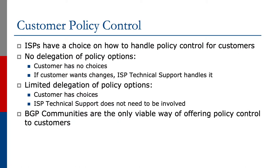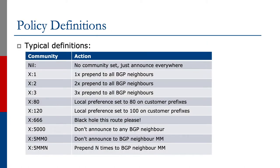This slide shows a recap of typical community definitions as defined by an ISP. If no community is set, announce everywhere. Community 1 means prepend once to all BGP neighbors, 2 prepend twice, 3 prepend three times. Community 80 sets a local preference of 80 on customer prefixes, 120 sets local preference to 120. Community 666 blackholes the route — do not announce it anywhere, or announce it with the next hop of null.